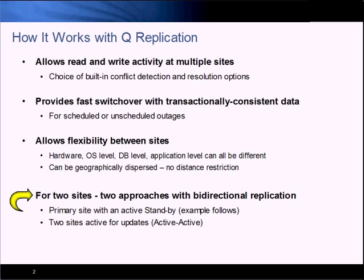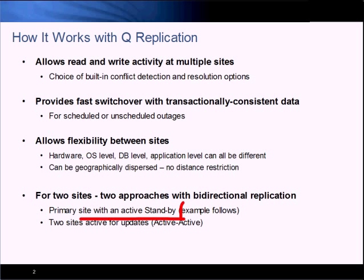Now let's get back to our example. We're going to look at an availability scenario between two sites. We have two approaches we could take: either a primary site with a standby, or two sites that are both being used for update activity. Some people call the latter one active-active, but both of these are really active-active scenarios. I'm going to use the first in this example because it's simpler and illustrates most major points for both approaches.